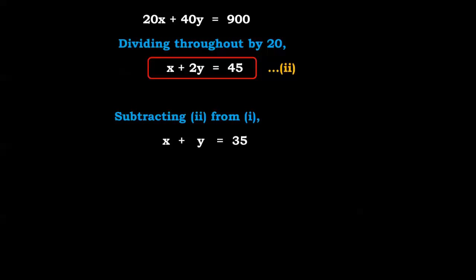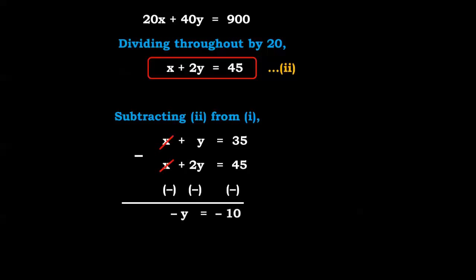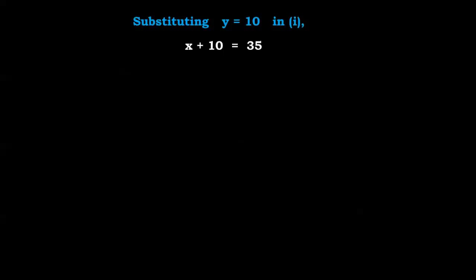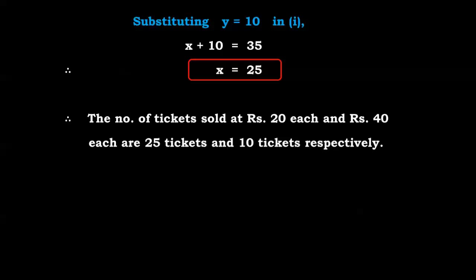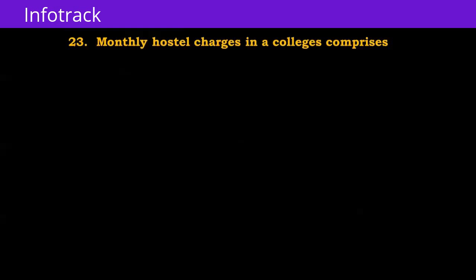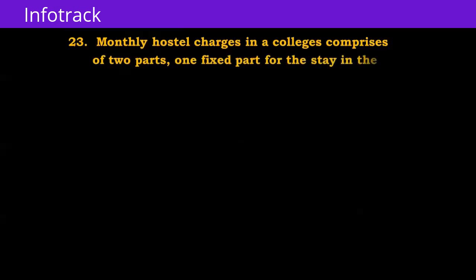Subtracting equation 1 from equation 2: (x + 2y) - (x + y) = 45 - 35, so y = 10. Substituting y = 10 in equation 1: x + 10 = 35, so x = 25. The number of tickets sold at rupees 20 rate is 25 and at rupees 40 rate is 10.